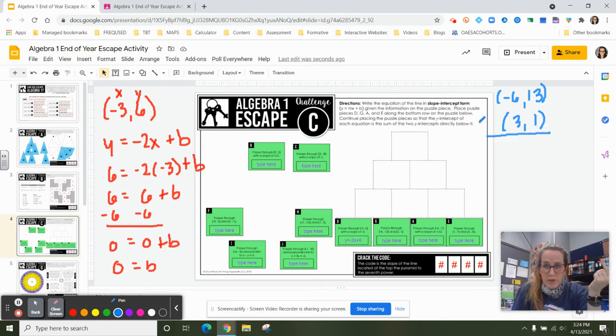So you could plug it into slope formula. But I know slope formula is subtracting, right? So 13 minus 1 is 12. Negative 6 minus 3 is negative 9. So let's see here. My slope is going to be 12 over negative 9, which those both divide by 3.